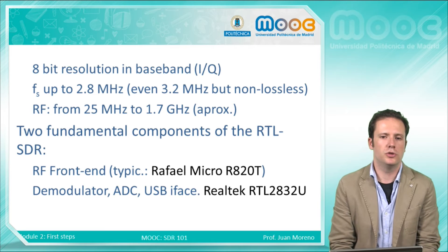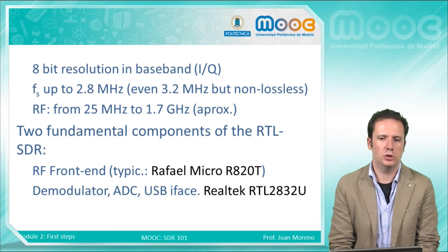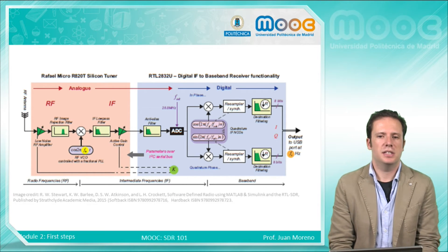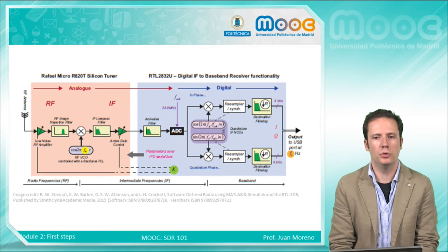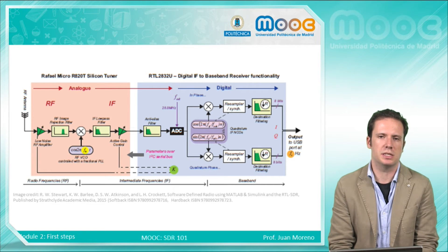The maximum radio frequency you will be able to receive is 1.7 or maybe 1.8 GHz. The two fundamental components of the RTL-SDR are the RF front-end and the demodulator — the front-end is typically the Raphael Micro R820T and the demodulator is typically the Realtek RTL2832U. Looking at the internal stages, you can see on the left the analog part and on the right the digital part. The output goes to your computer through the USB port, and you can tune three parameters: the gain, the sampling frequency, and the center frequency.